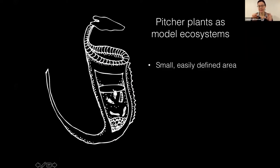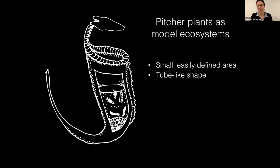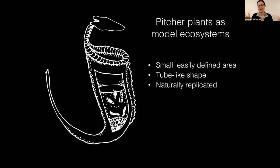One reason is that you have this small, easily defined area, which can be hard to find in community ecology. You have this small, sort of isolated community — it's like a little aquatic island. They have this tube-like shape, so bringing them into the lab is not such a stretch. It's naturally replicated, so in the habitat you can have many different pitchers growing on the same plant in the same environment.